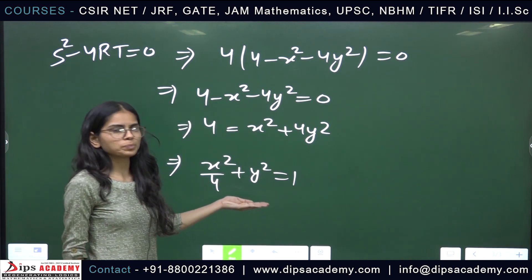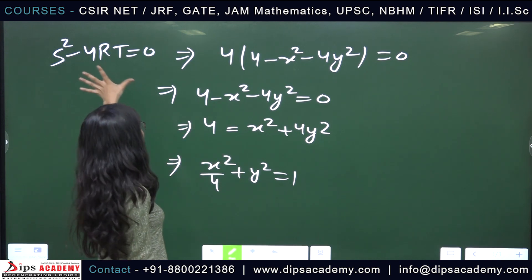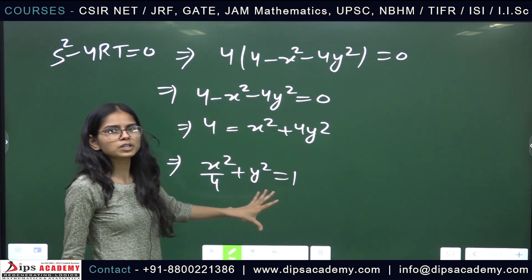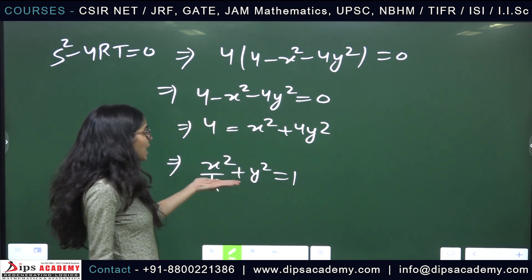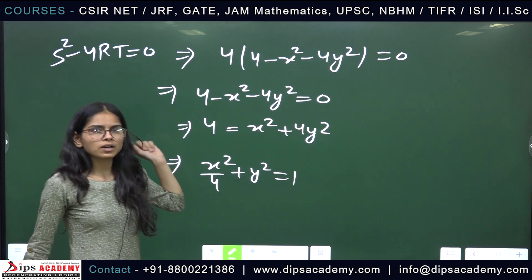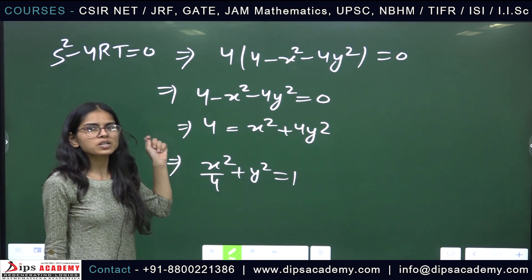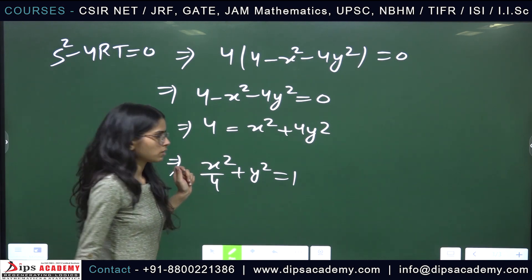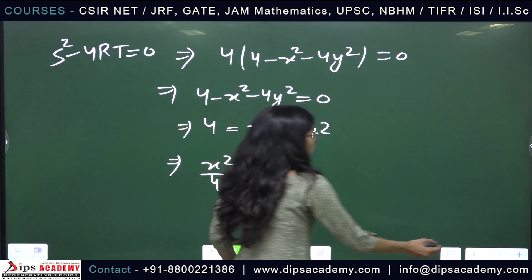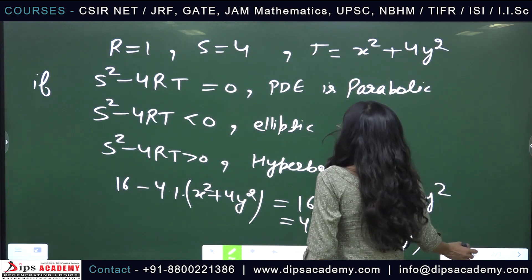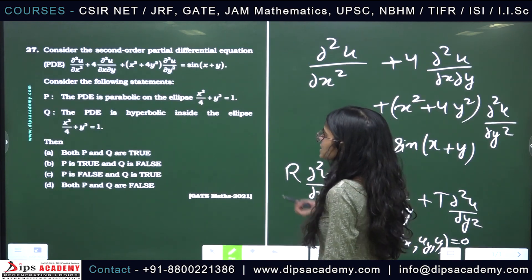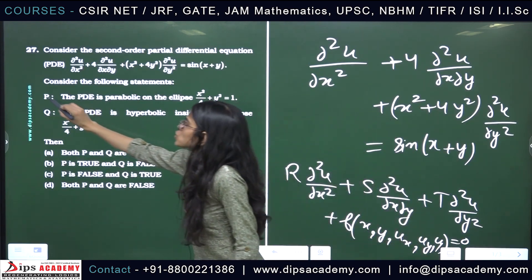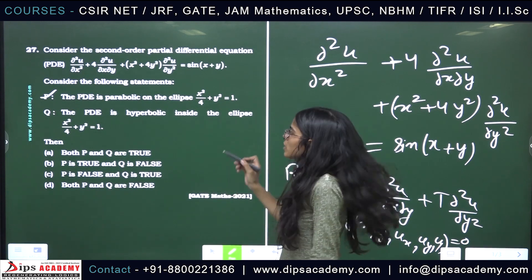We obtain exactly the ellipse x²/4 + y² = 1. So whenever the discriminant equals 0, we are on that ellipse, meaning the PDE is parabolic on that ellipse. Therefore Statement P is true.